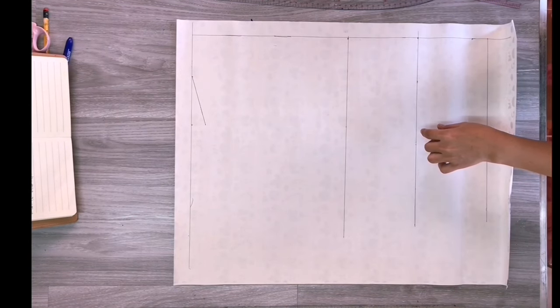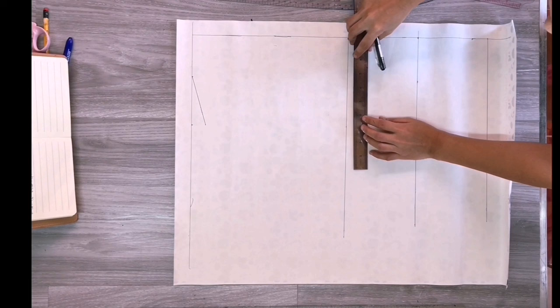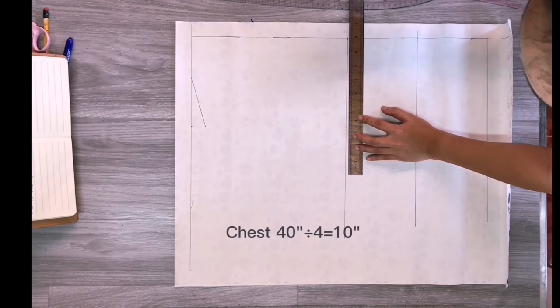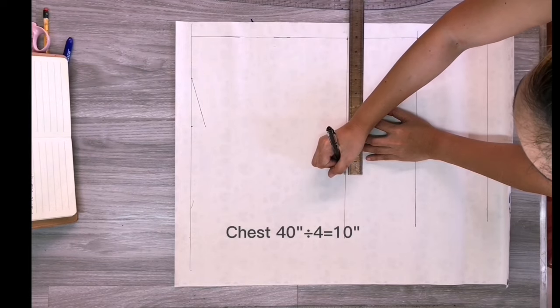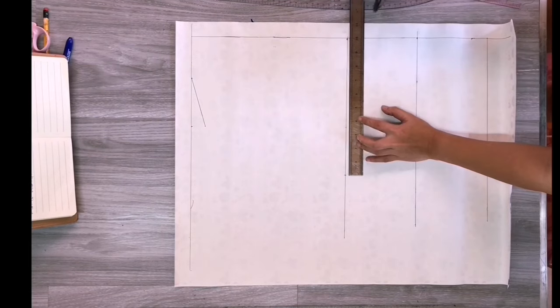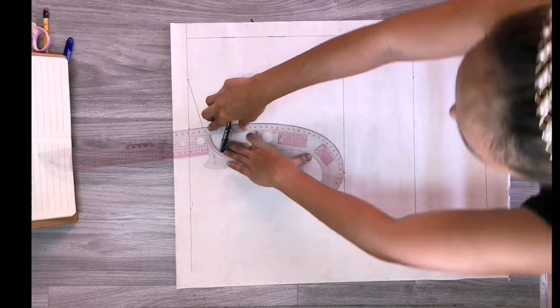To make the armhole, we need to apply the chest measurement on the bust line. His chest circumference is 40 inches. We're gonna use a quarter of it, which is 10 inches. I then connected it to the shoulder using a French curve.